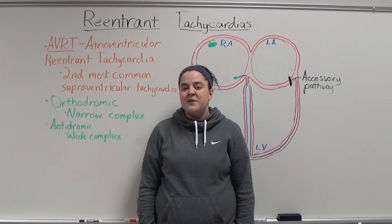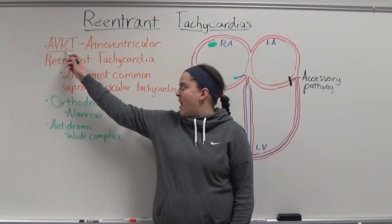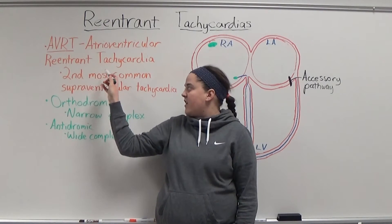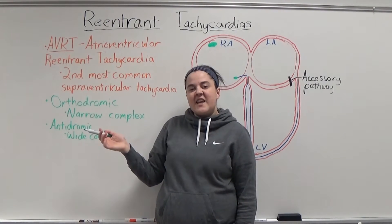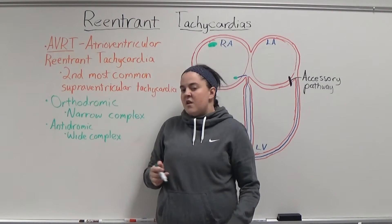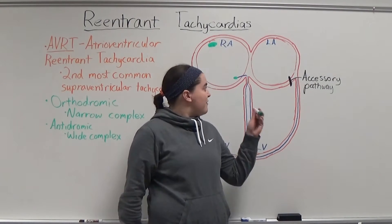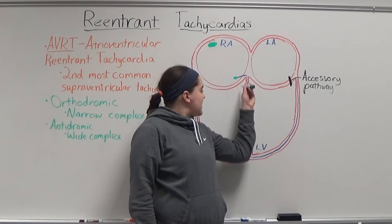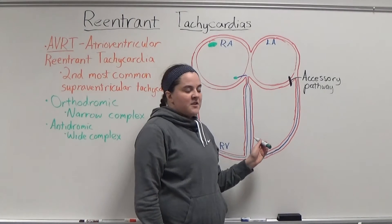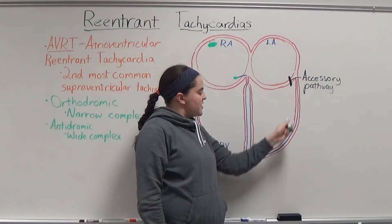There are two types of circus reentry tachycardia, but for today we're just going to talk about AVRT. AVRT stands for atrioventricular reentrant tachycardia and it's the second most common type of supraventricular tachycardia. There are two types of AVRT: orthodromic, meaning the impulse travels in the same direction as normal conduction, and antidromic, which means it travels in the opposite direction of normal conduction.